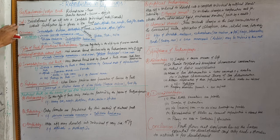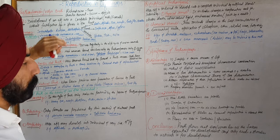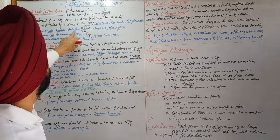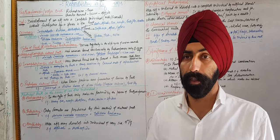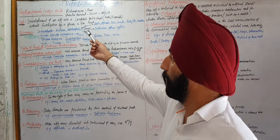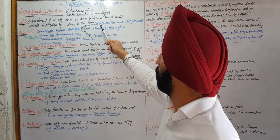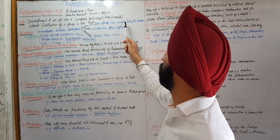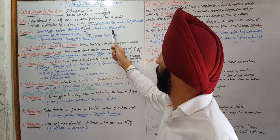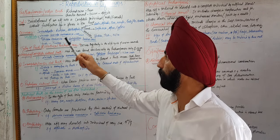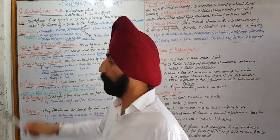Parthenogenesis is present in invertebrates, especially some rotifers and arthropods. Arthropoda is the largest phylum in the world, so variations are present. Within class Insecta: ants, aphids, bees, wasps, gallfly, beetles, and weevils show parthenogenesis. Among crustaceans: Daphnia and Cypris. Among arachnids: spiders, ticks, and mites also exhibit this process.